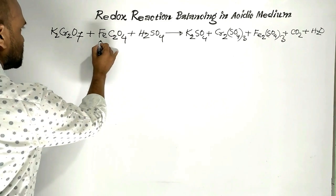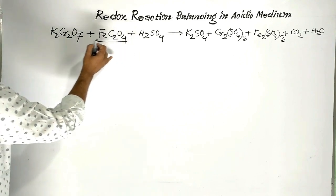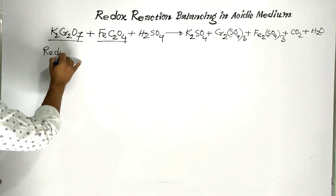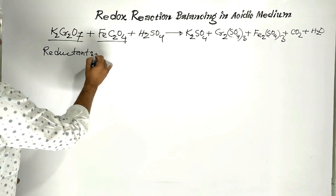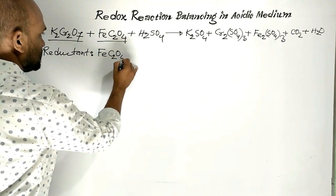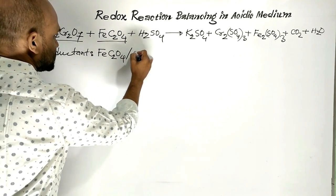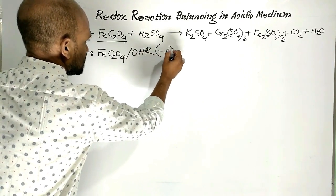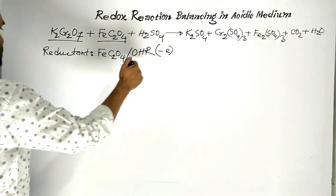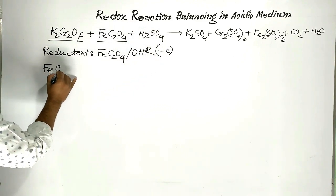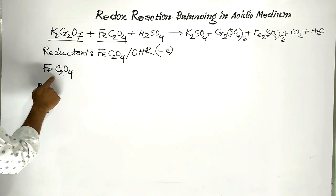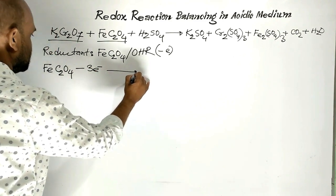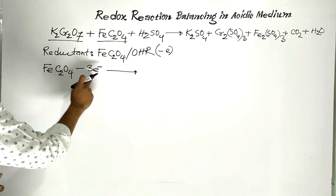In this reaction, Ferrous Oxalate is the Reductant and Potassium Dichromate is the Oxidant. Ferrous Oxalate undergoes an oxidation half-reaction through the release of electrons. Ferrous Oxalate releases 3 electrons in this way.